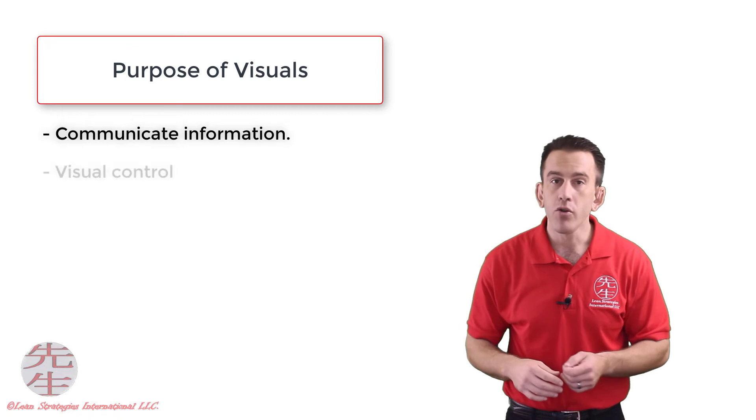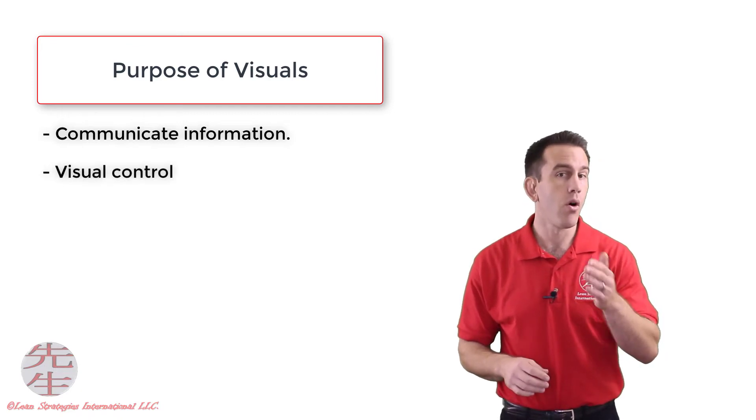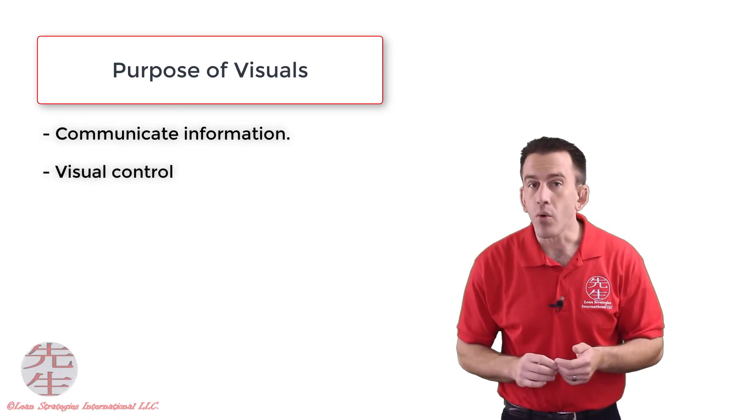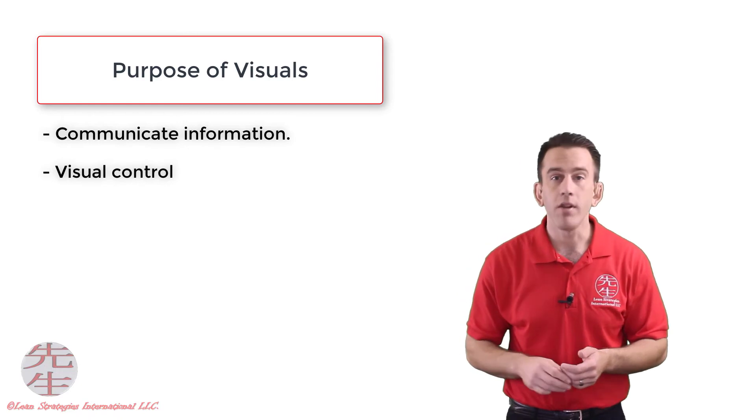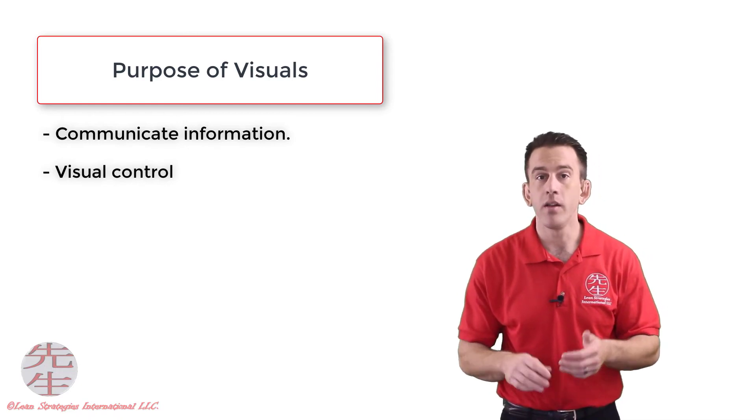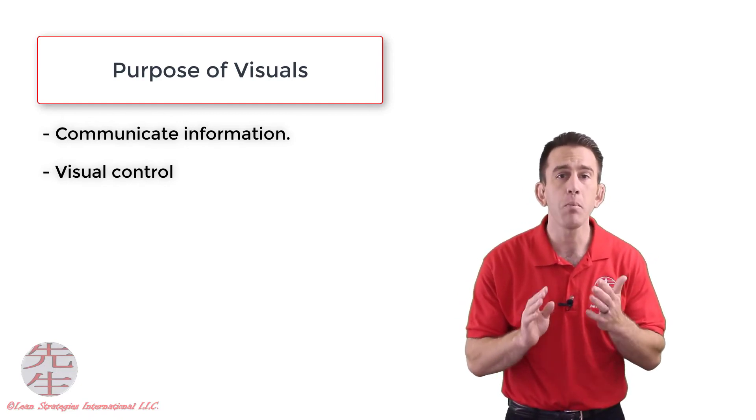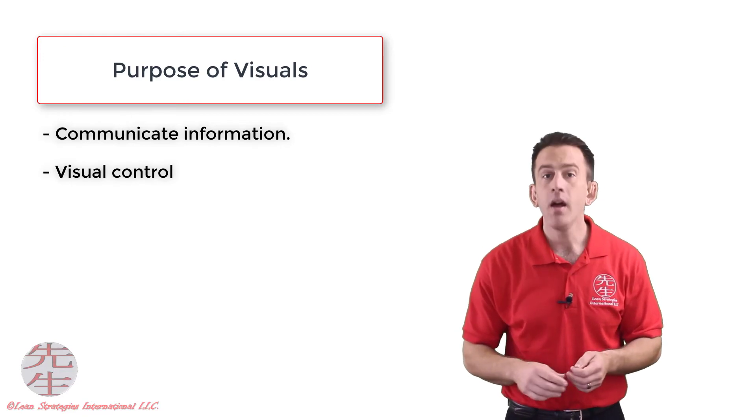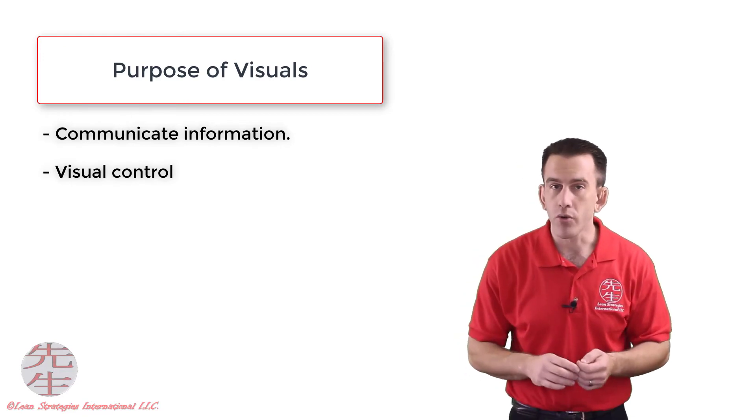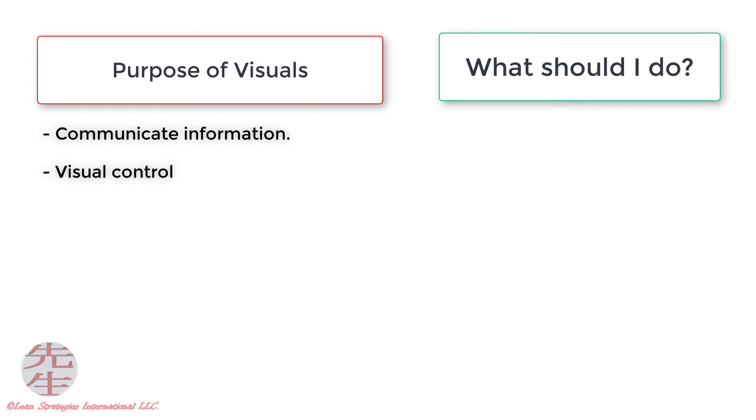The next type of visual is a visual control. These types of visuals help to control activities by providing instruction as to how a worker performs an activity. Some questions that a visual control might answer are: What should I do? Or how do I do it?